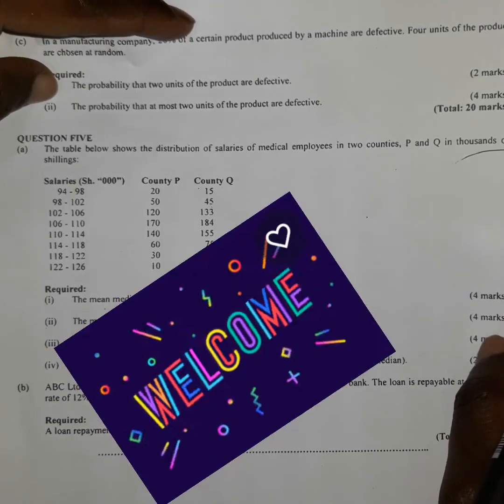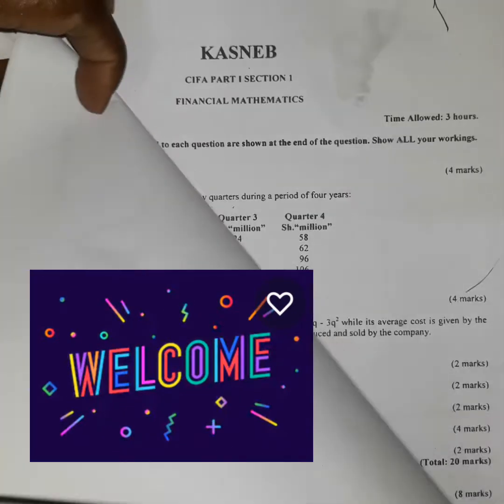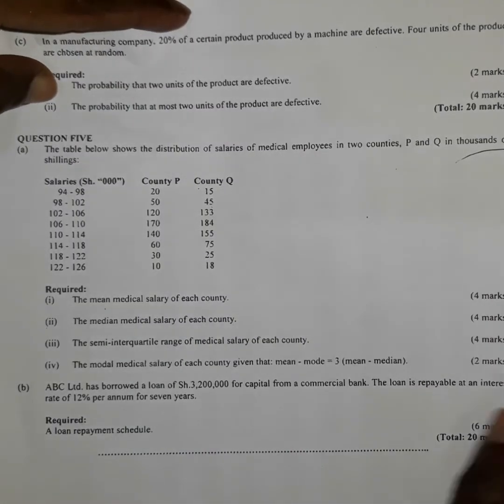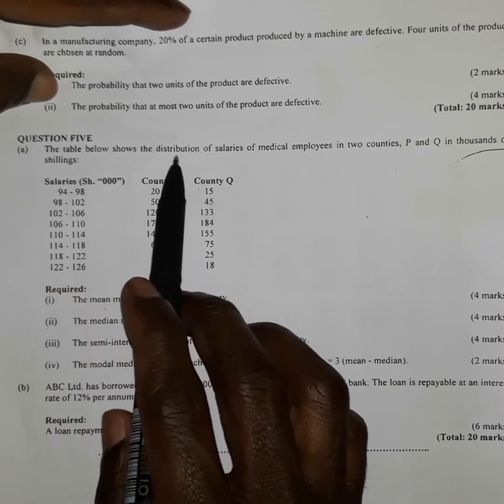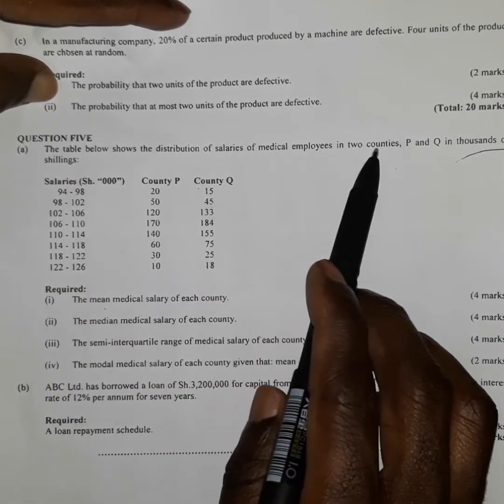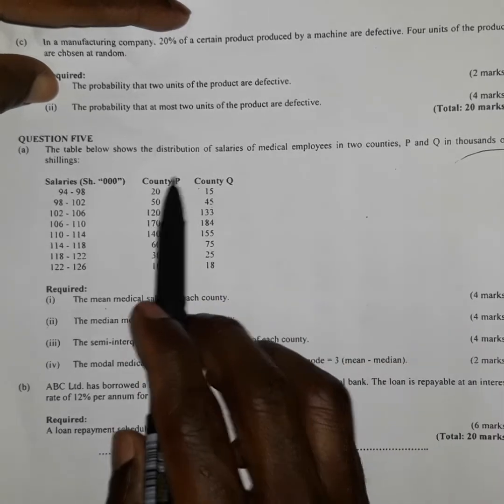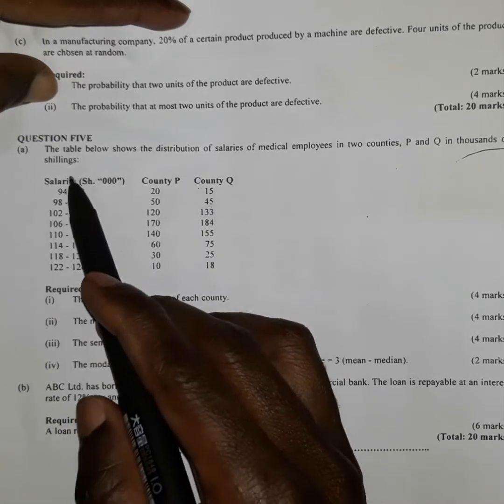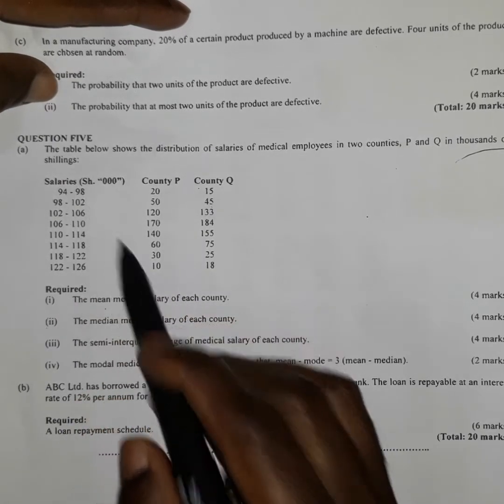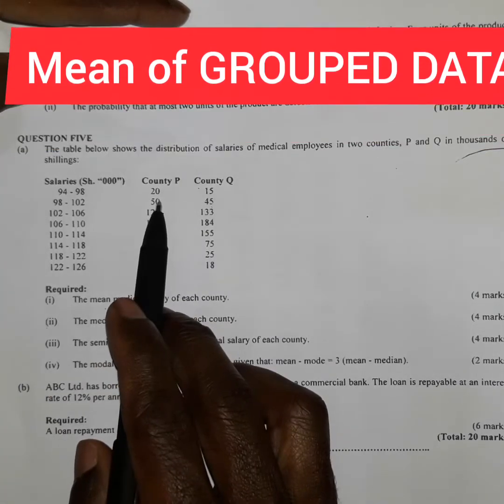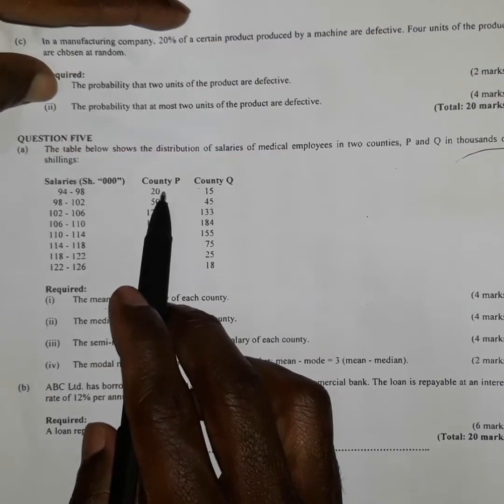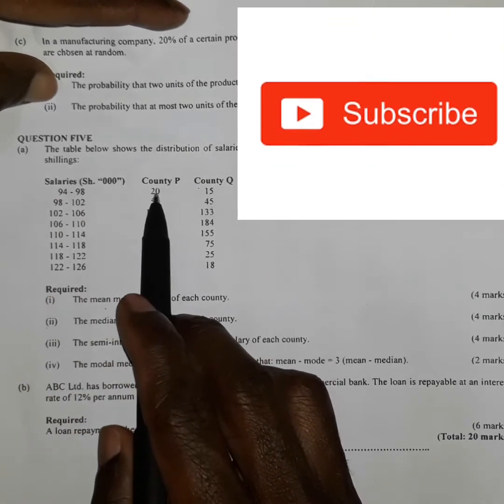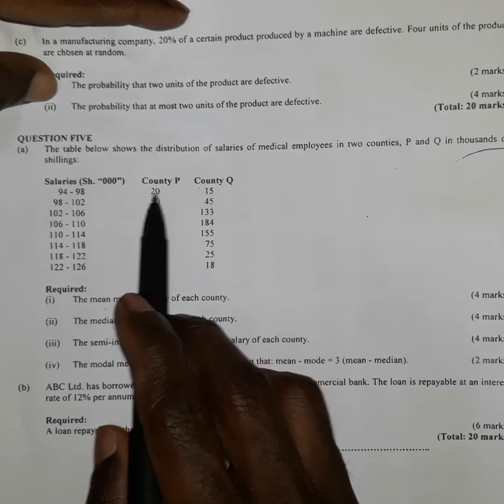Welcome everyone. Now here we have an assignment from a past KCSE examination. The question states: the table below shows the distribution of salaries of medical employees in two countries P and Q in thousands of shillings. We are viewing the salaries in terms of groups. For each country, we have the number of frequency. For example, the group 94 to 98, we have a total of 20 employees paid under that bracket of salary.